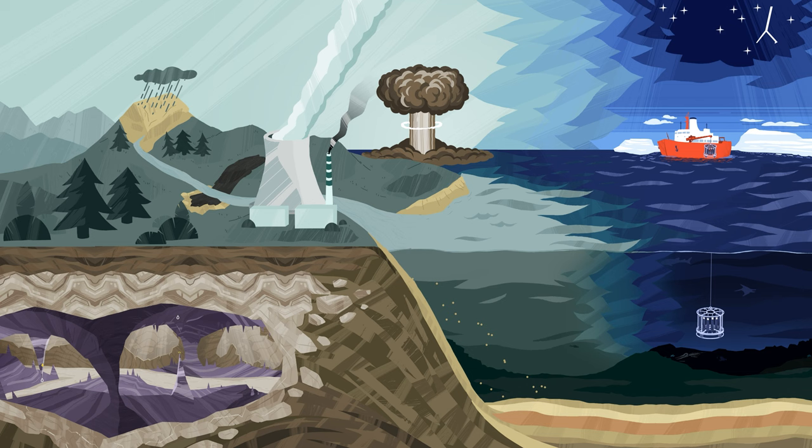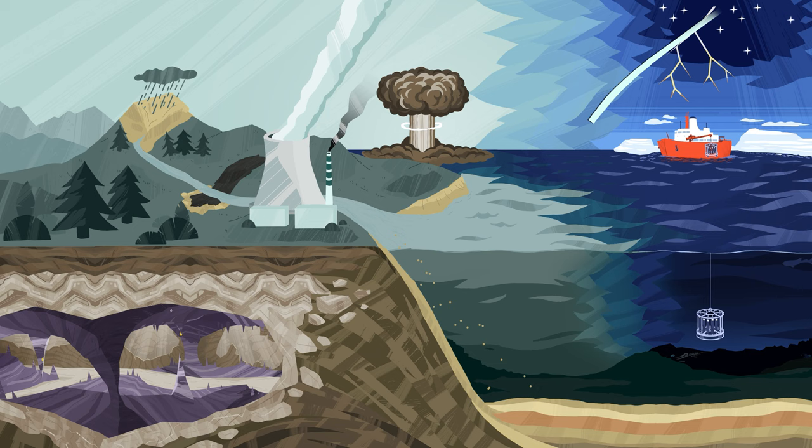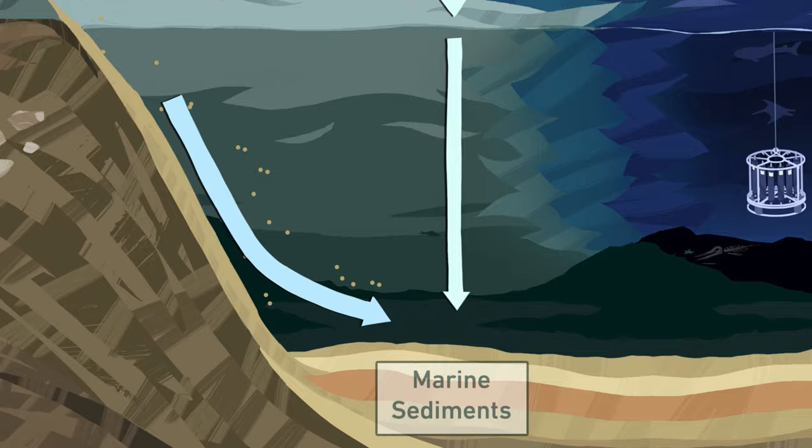Geologic records are archives of our past. They date back millions of years and hold, among other things, information about climate change throughout Earth's history. Our oceans are home to a very important kind of climate archive: marine sediments.